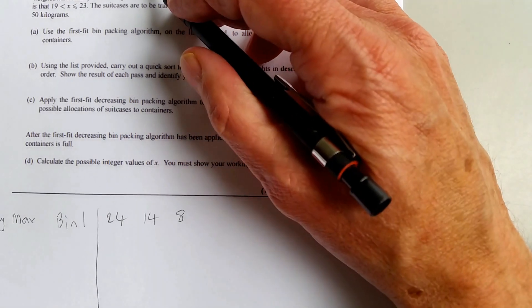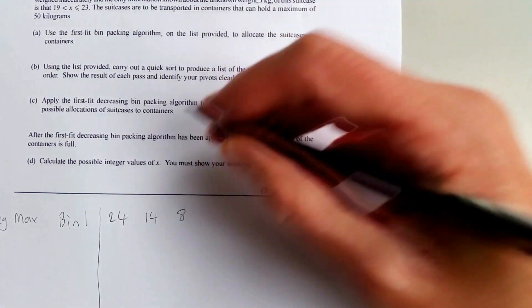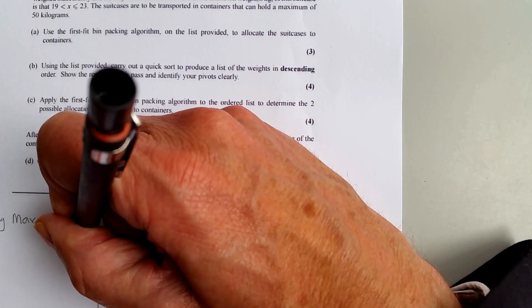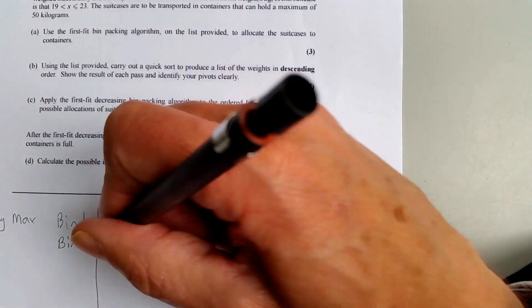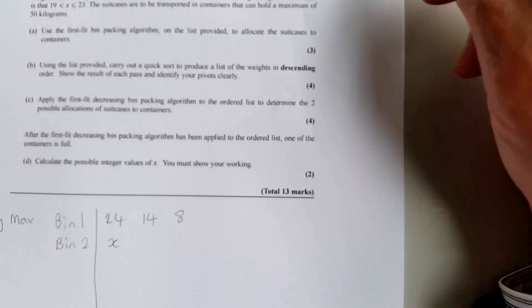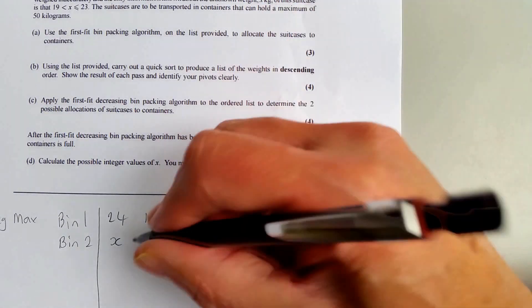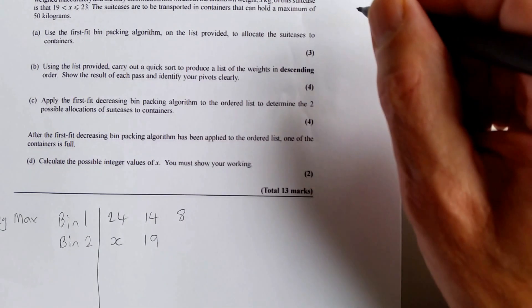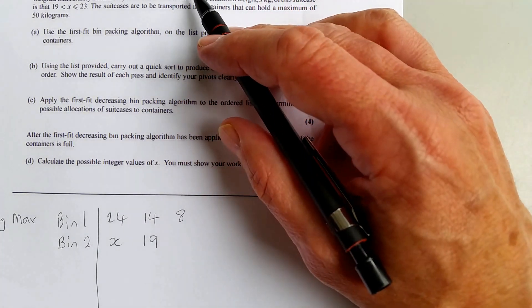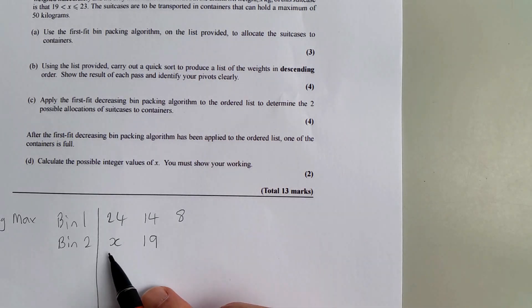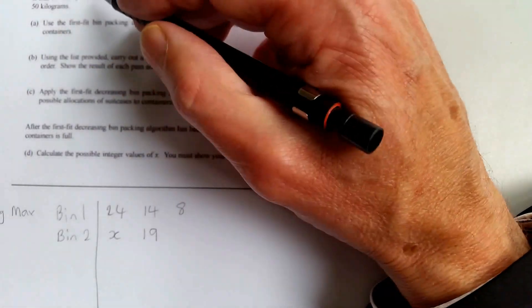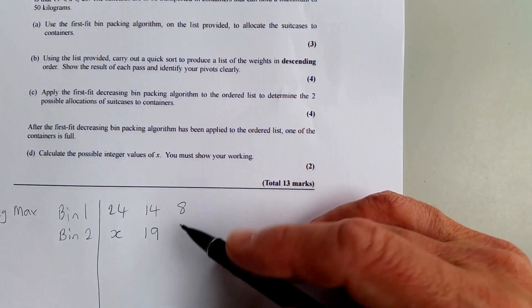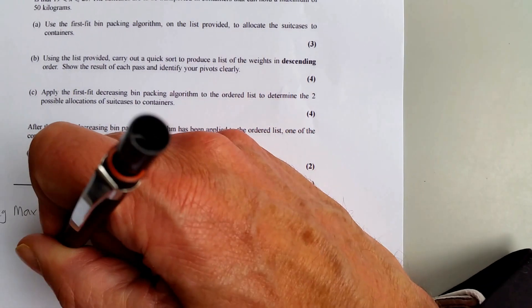Now X is between 19 and 23, so that must fit in bin 2. We've got X here, and then the next one is 19, which will fit in here as well. The next one is 25. Whether we use 19 or 23, bin 2 would go past 50, so we have to put the 25 in bin 3.